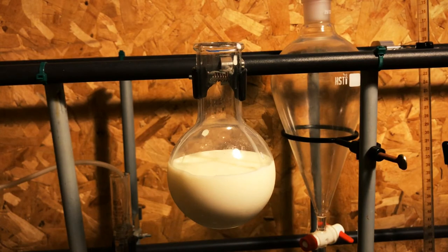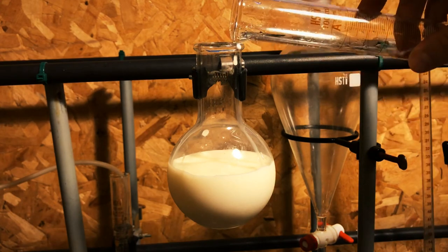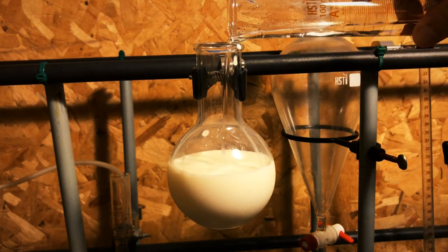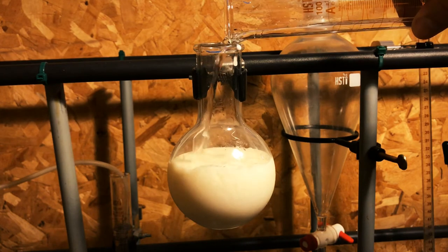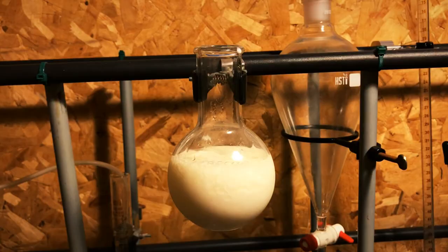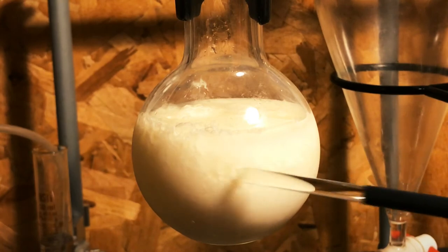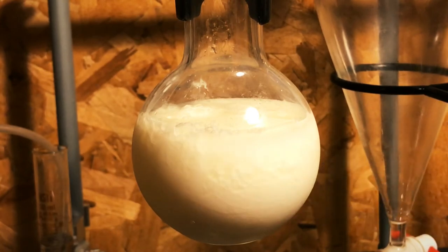Now to the milk, I'm going to add approximately 20 milliliters of acetic acid. If you look very closely, you can see a precipitate being drawn out of the solution. This precipitate is casein.